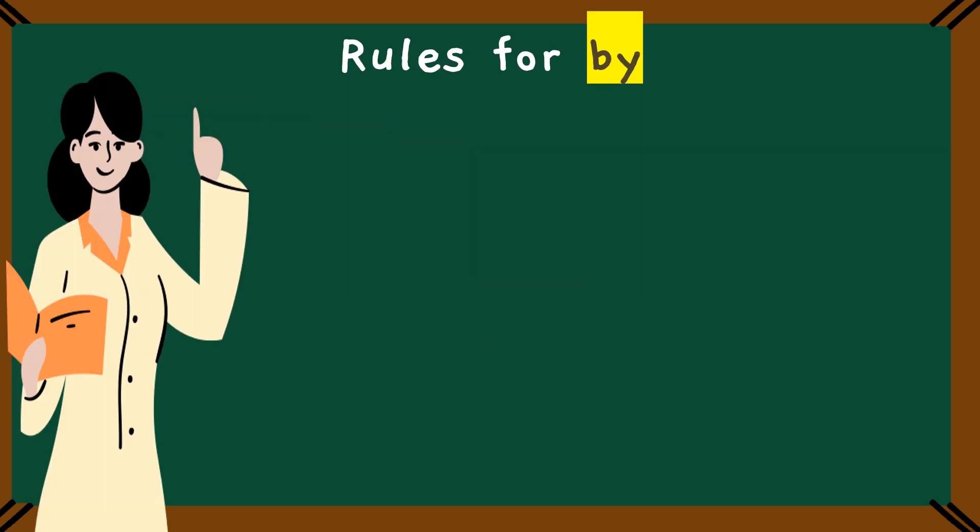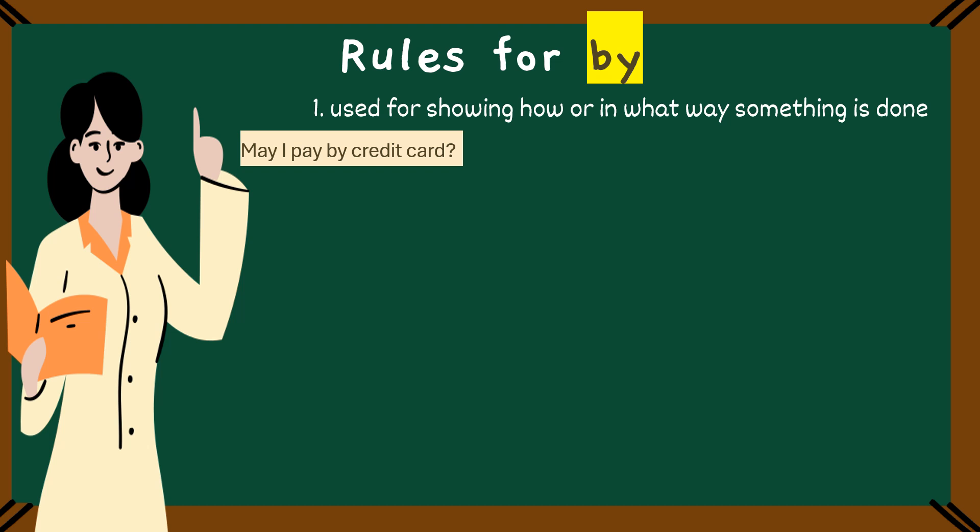Let's start with the preposition by. By is a powerful little word my dear children and it has many uses. Let's look at the rules for using by with the help of examples. The first one is showing how or in what way something is done. For example, may I pay by credit card?